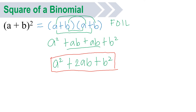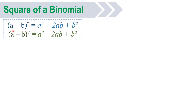Actually, you can solve the square of a binomial without applying the FOIL method. Just observe the pattern we obtained from our answer. The first term is just the square of our first term. The last term is the square of our last term. And for the middle term, you just multiply the first and last terms times 2. Every time you encounter a binomial raised to 2, just follow this pattern.